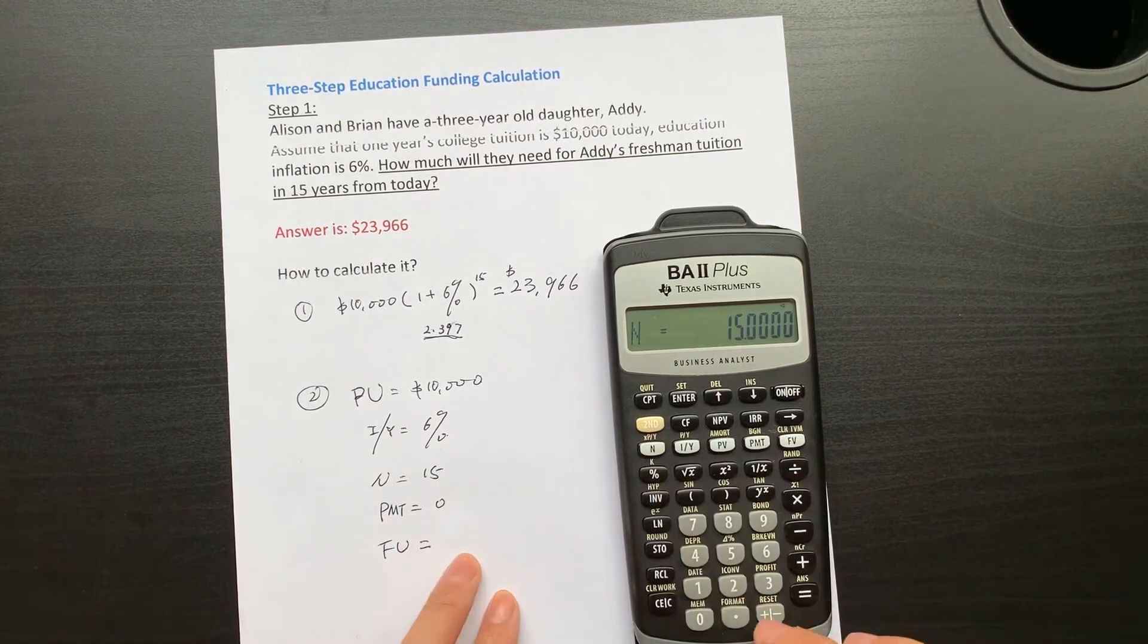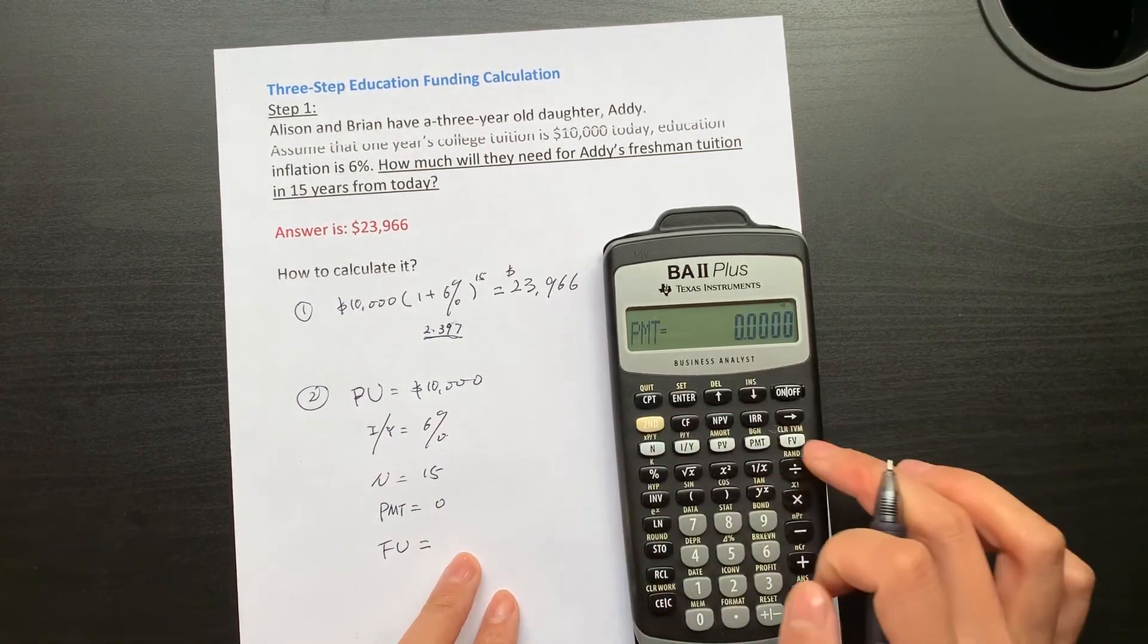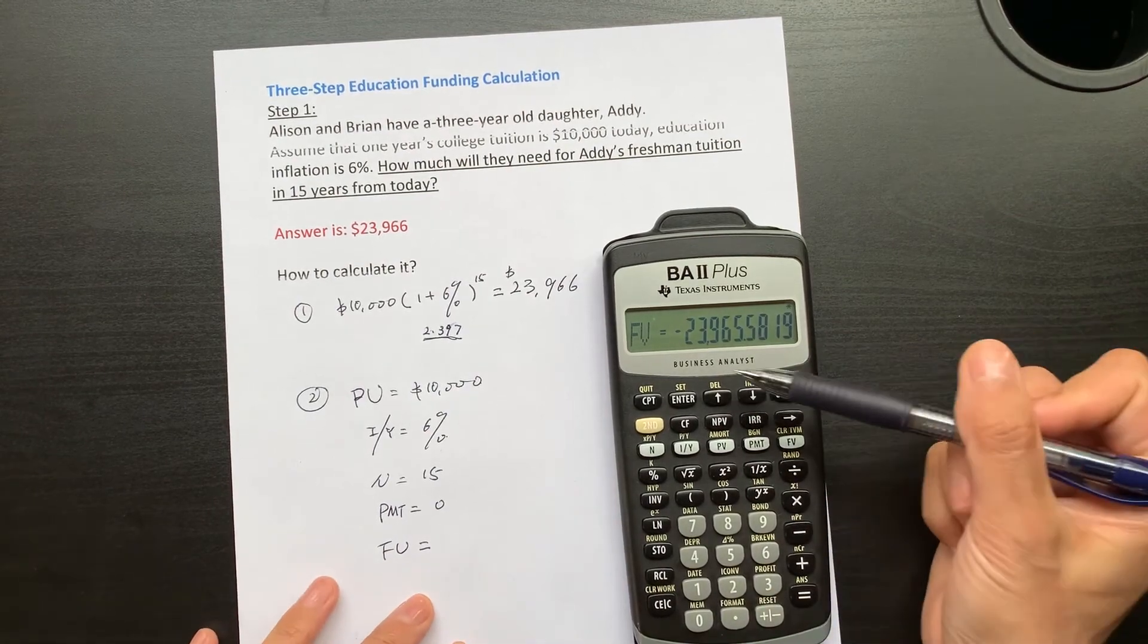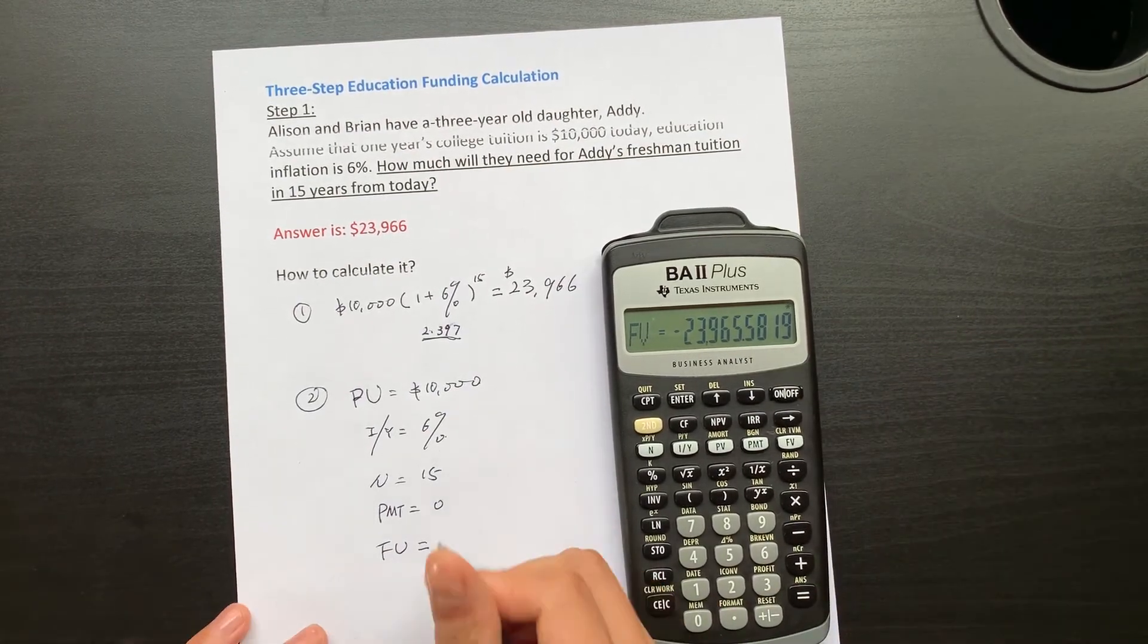Interest rate 6%, 15 years, and zero for PMT. Compute the future value and it's exactly the same thing: $23,966.